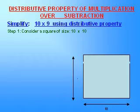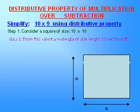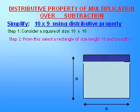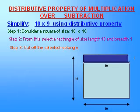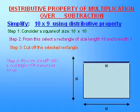From this we select a rectangle with length 10 and breadth 1. Now cut off the selected rectangle from the square. So we are left with a rectangle with measures 10 and 9.